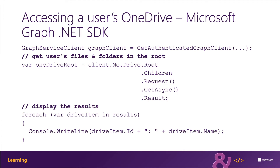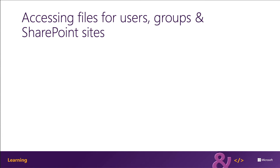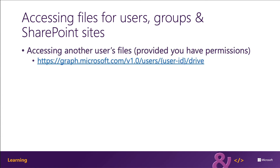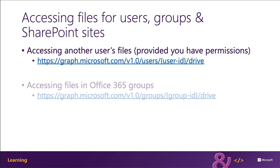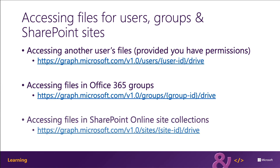The Microsoft Graph also enables the signed-in user to access another user's OneDrive, provided they've been granted access to it. You do this by going to the Microsoft Graph /users/{userID}/drive endpoint, replacing the user ID with the actual ID of that user. Microsoft Graph can also access OneDrive accounts for groups — by going to the group's ID /drive endpoint — and the SharePoint site's default document library by going to the site ID /drive endpoint.